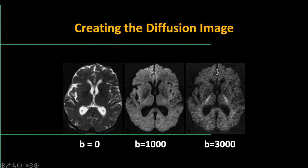One more word about BVALs. A pretty typical BVAL scheme: a BVAL of zero is essentially identical to a T2 weighted scan. A BVAL of 1000 — notice the overall signal is a little bit lower and the signal quality is a little bit noisier. It becomes even noisier with a BVAL of 3000. Higher BVALs are always going to have more degraded signal and be more susceptible to artifacts such as motion.